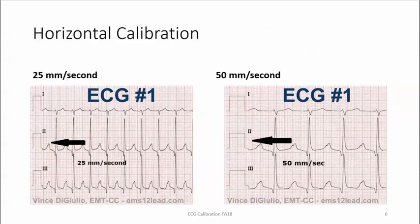At 25 millimeters per second, the calibration mark is 10 millimeters by 5 millimeters. At 50 millimeters per second, the mark is a square — 10 millimeters by 10 millimeters.